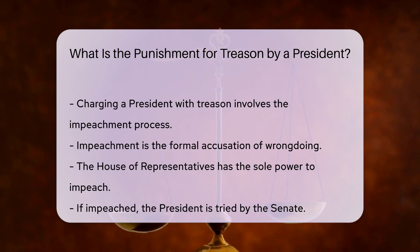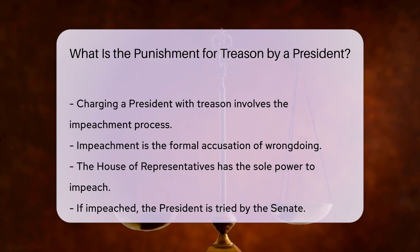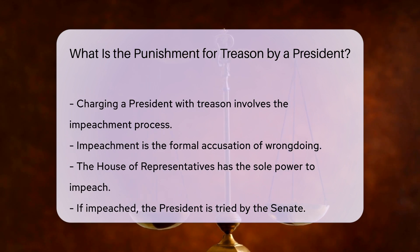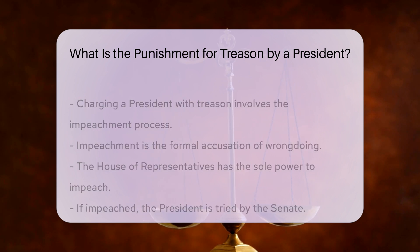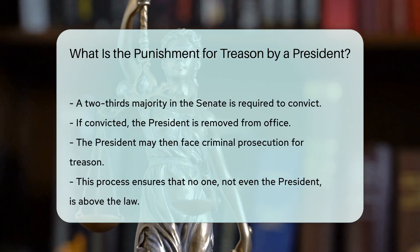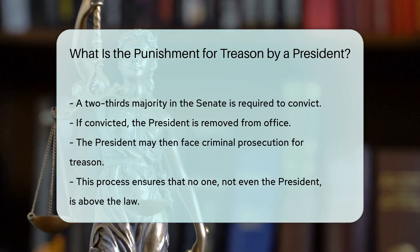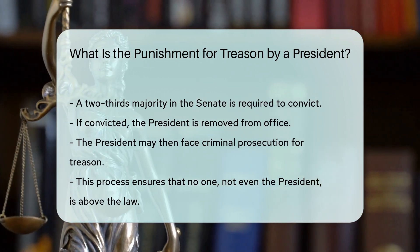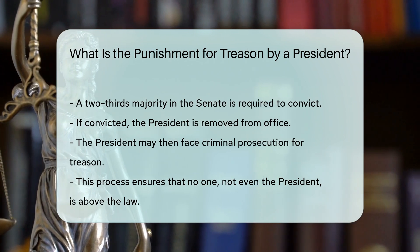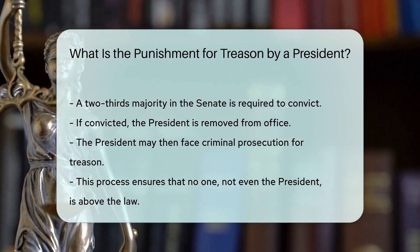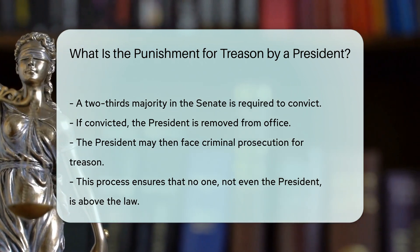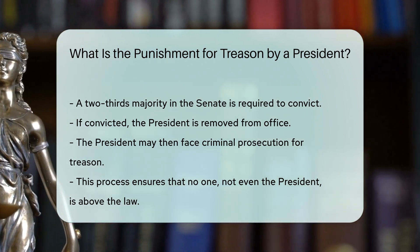The process of charging a president with treason involves impeachment. Impeachment is the formal accusation of wrongdoing. The House of Representatives has the sole power to impeach. If impeached, the president is tried by the Senate. A two-thirds majority in the Senate is required to convict. If convicted, the president is removed from office. They may then face criminal prosecution for treason. This ensures that no one, not even the president, is above the law.